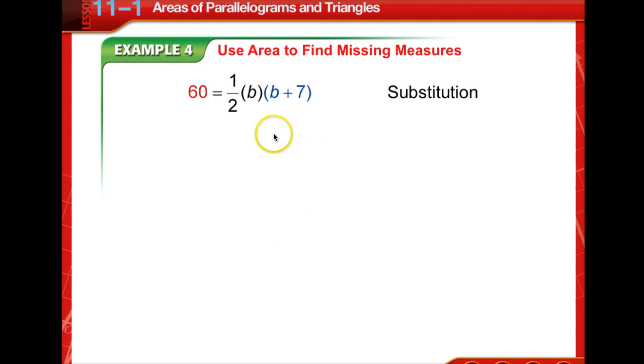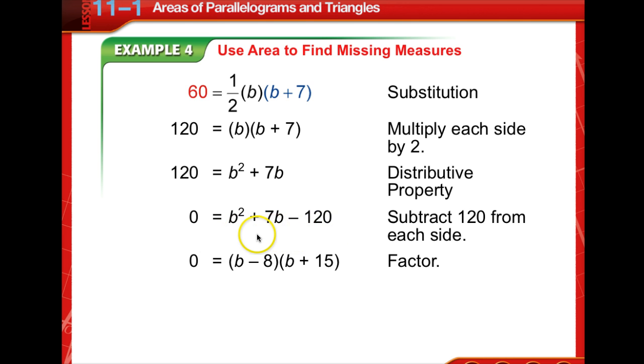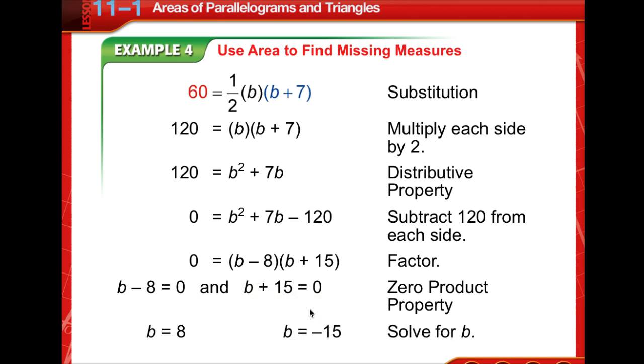And use the formula for the area of the triangle to find B. Now let's substitute in. Area is one half of the base times the height. Then we know the height is 7 more than the base. Let's get rid of this fraction by multiplying both sides by 2. Then we distribute the B across the parentheses. Let's subtract 120 from both sides. And factor. So the factors of 120 that their difference is a positive 7 would be 15 and 8. Set them both equal to 0 using the zero product property. And we know that B is equal to 8 and negative 15.